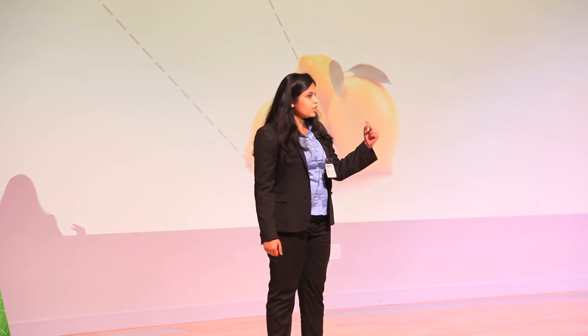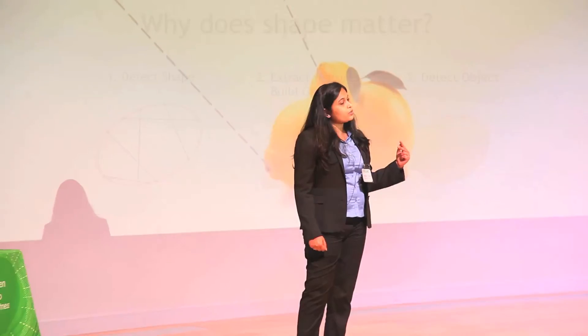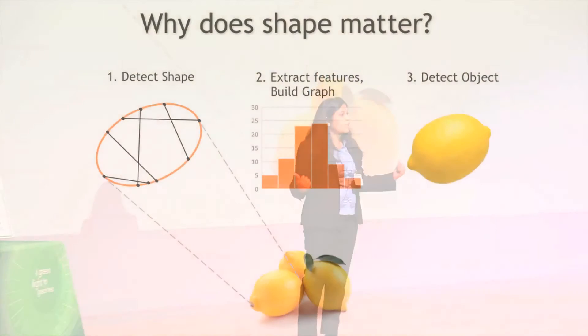I found that different shapes generate different graphs, which helps me in identifying objects correctly. With my approach I was also able to overcome two challenges: first, identifying similar objects which are at different locations; and second, identifying similar objects which have different sizes. I also found that shape provides better discrimination between objects.